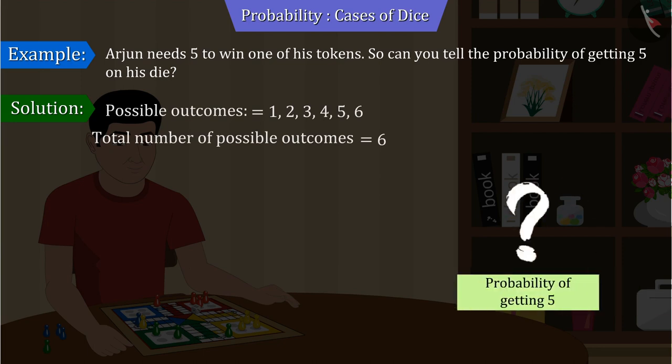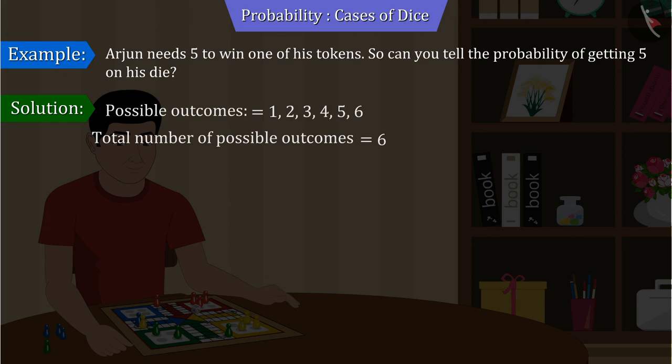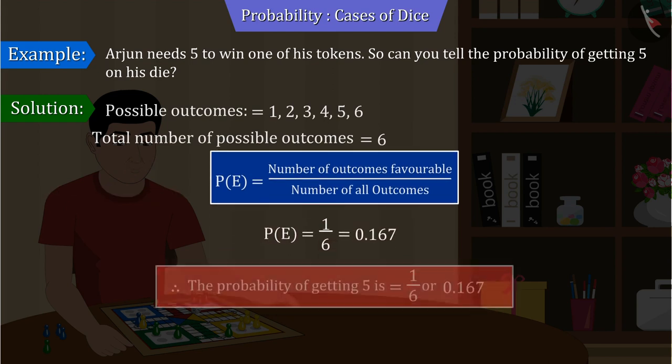Since we have to find the probability of getting five, the number of favorable outcomes will be one. Let us find the probability of getting five by the probability formula with the help of the outcome obtained, which is one by six or 0.167.